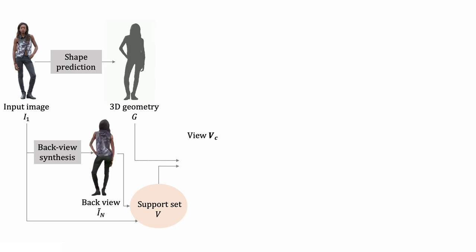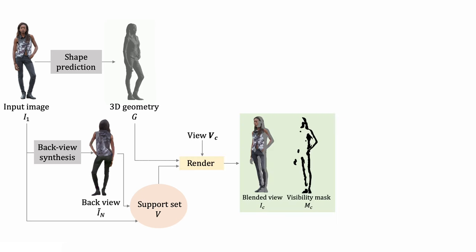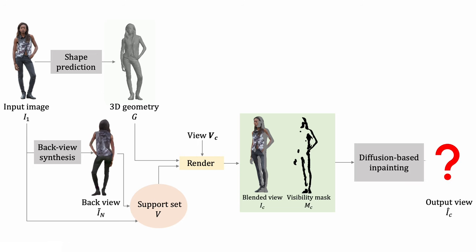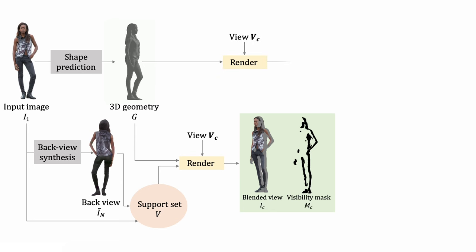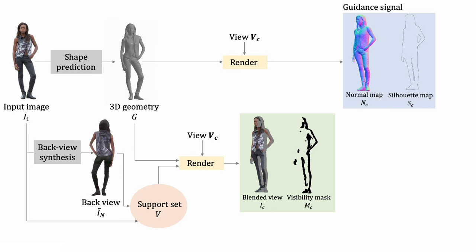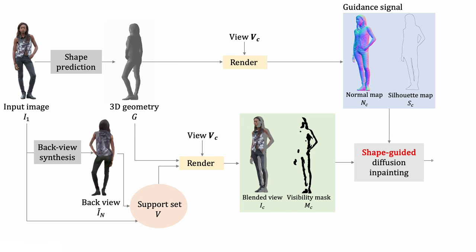Next, we render a novel view by blending the images in the support set guided by the 3D shape. One can use a diffusion model to inpaint the image, but it's difficult to maintain the shape. Our idea is to leverage the 3D shape to render the surface normal and contour and use them to guide the synthesis.